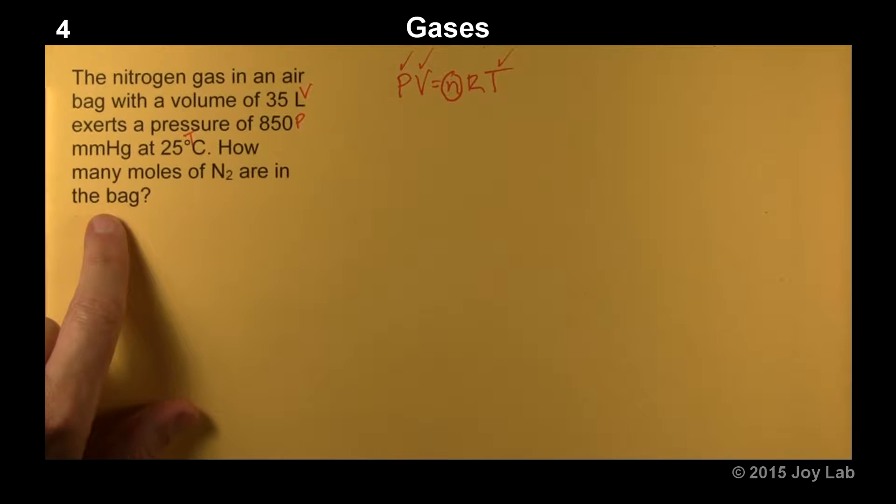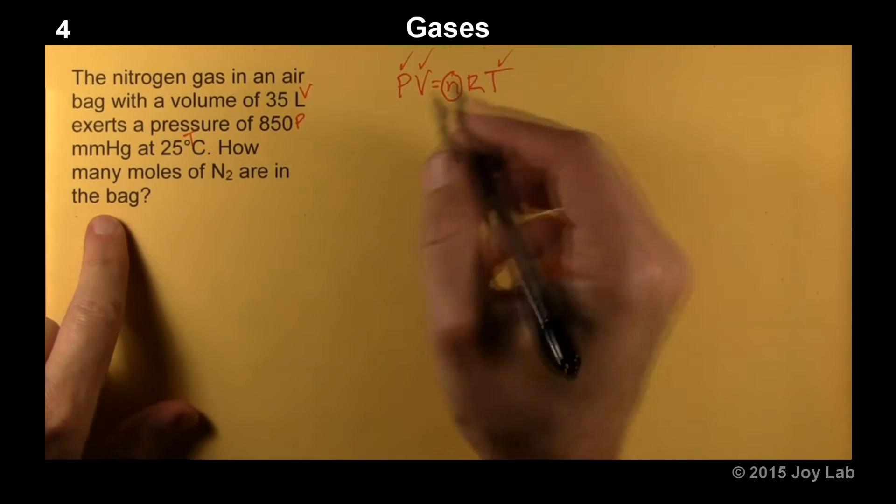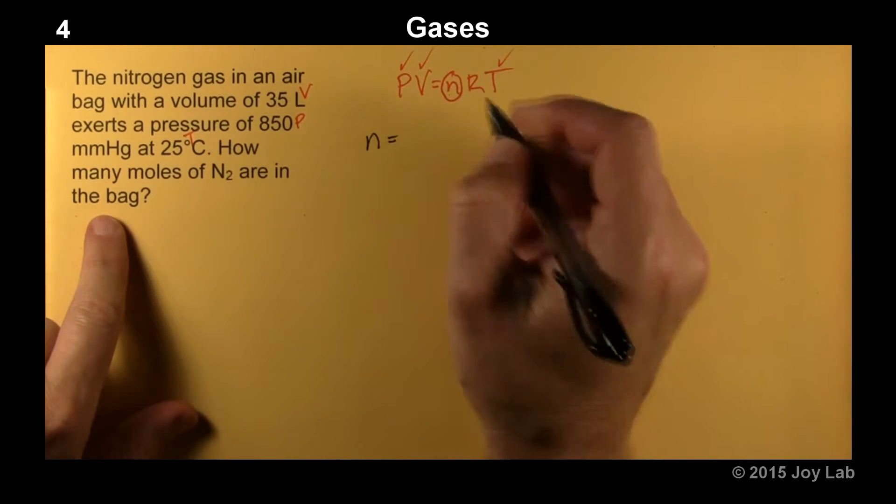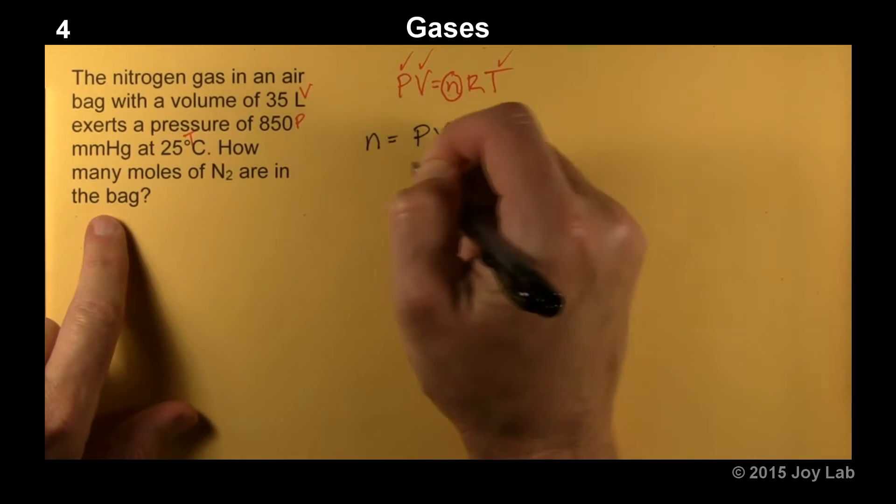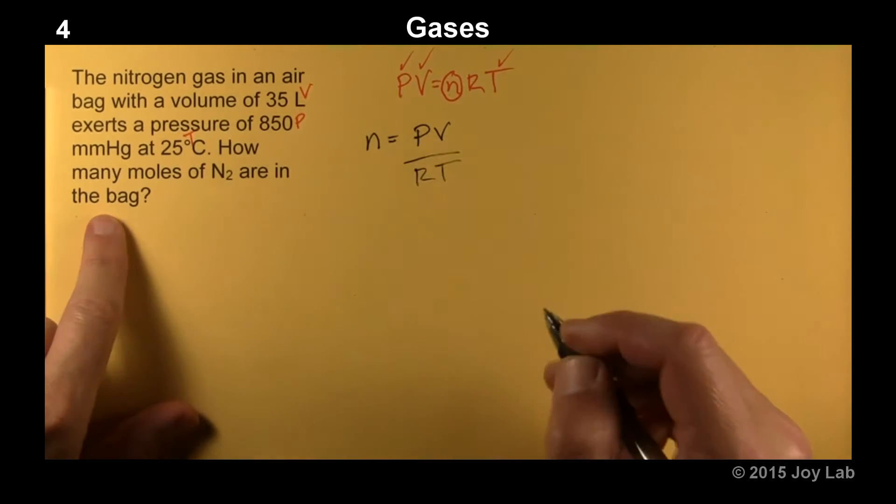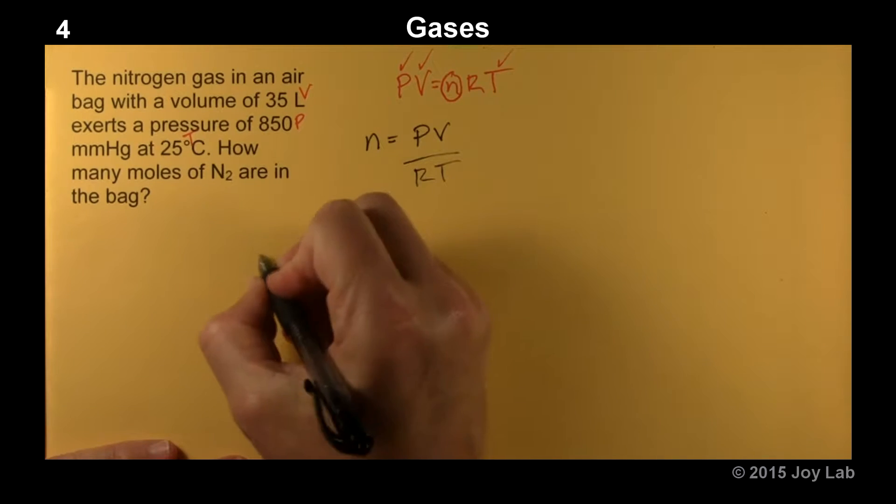So we're going to rearrange this thing for moles. So we know that n is equal to PV over RT. So let's go ahead and plug that in.